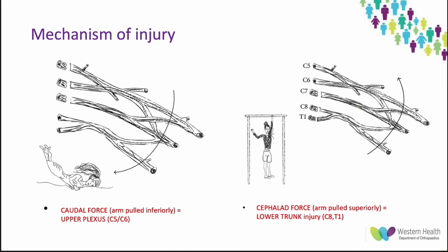The mechanism of injury is really important to differentiate between different types and to localize the level of the injury. Upper brachial plexus injury usually occurs when the head and neck are moved away from the ipsilateral shoulder violently — a caudal force with the arm pulled inferiorly gives a higher risk of upper plexus injury at C5 and C6. Whereas lower brachial plexus injury usually occurs when the upper limb is abducted above the level of the head with considerable force — a cephalad force with the arm pulled superiorly results in a lower trunk injury including C8 and T1.